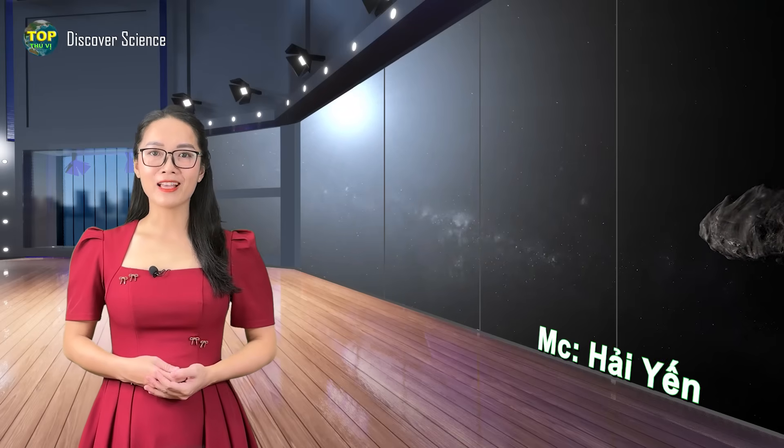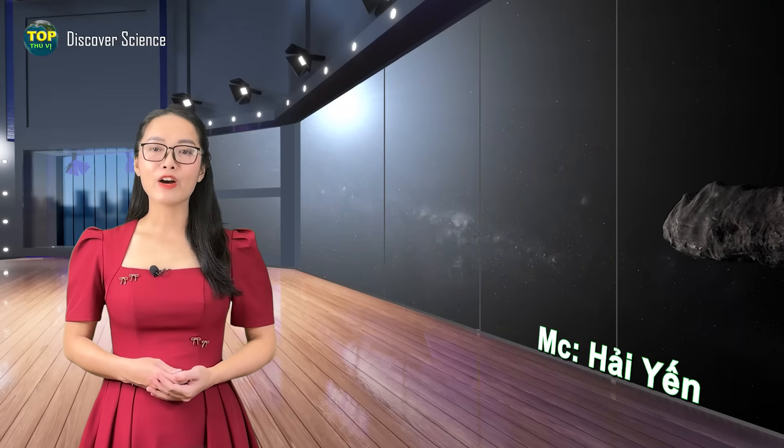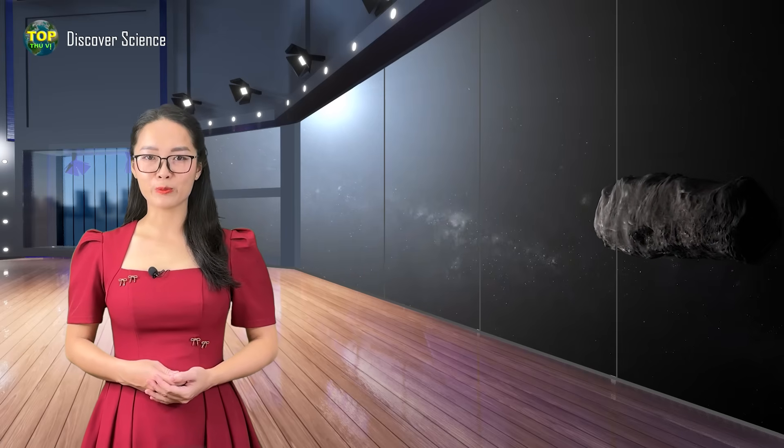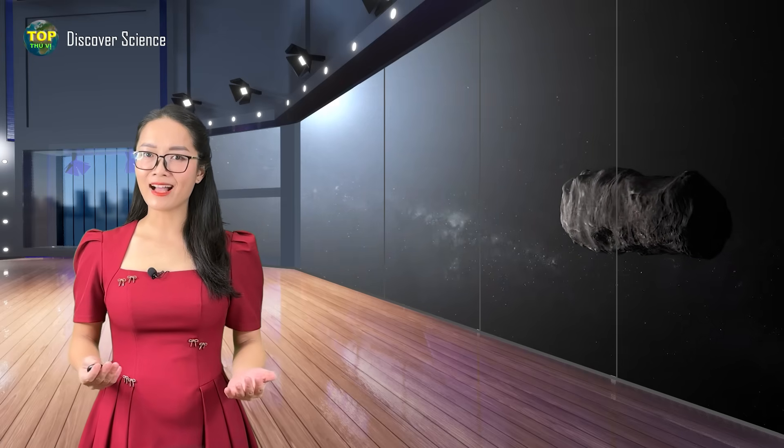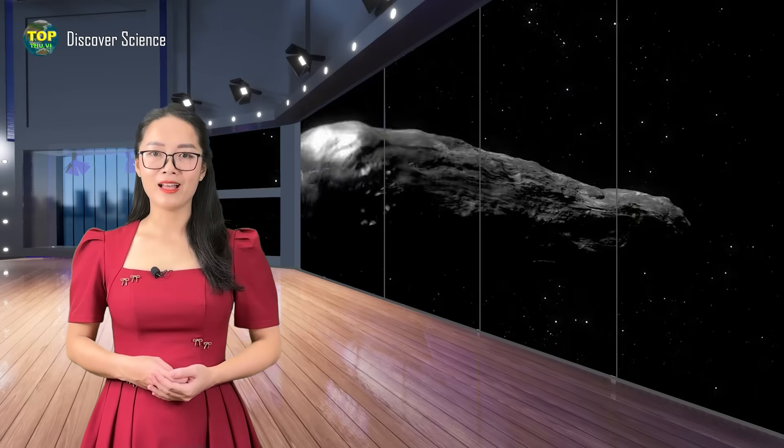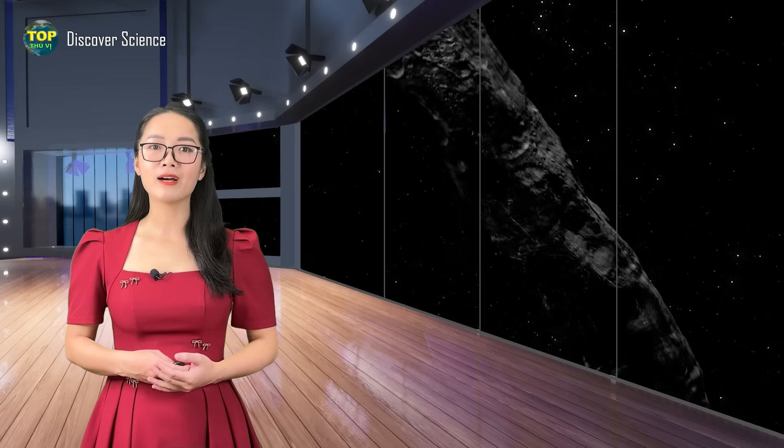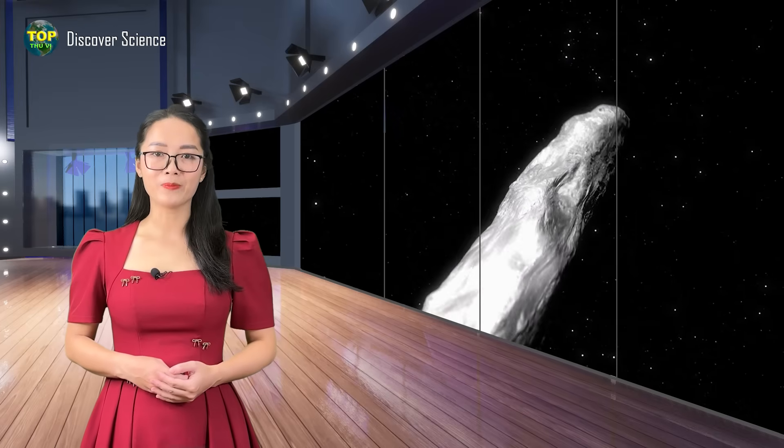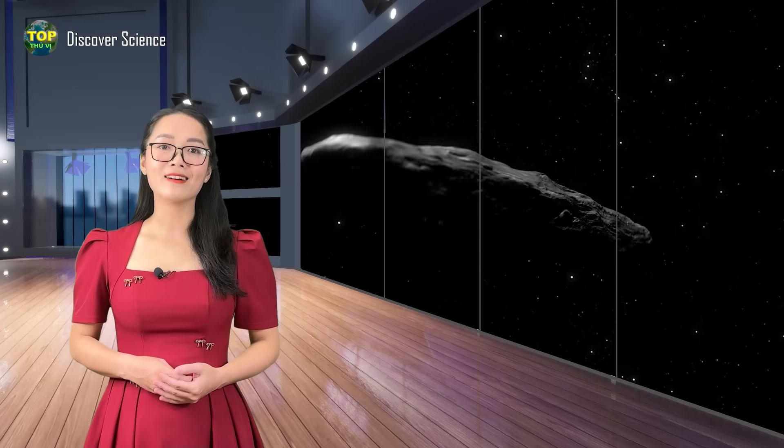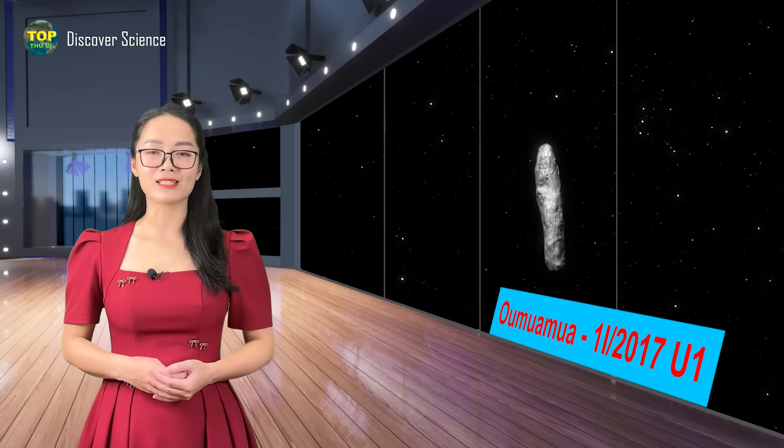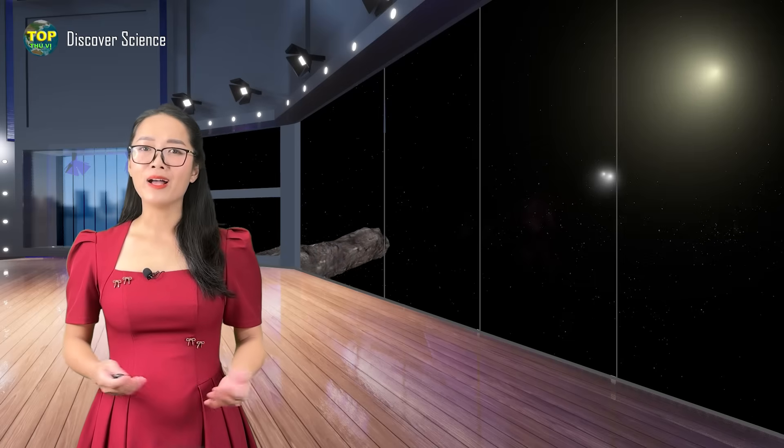Hi and greetings. In 2017, a strange object flew through our solar system at an incredible speed, but scientists didn't detect it at all. It wasn't until 40 days after it made its closest approach to the sun that people were shocked to discover its presence. Yes, I'm talking about 'Oumuamua, the strangest and most controversial object to have ever visited our solar system.